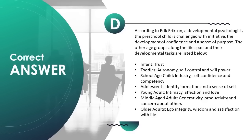Young adult — intimacy, affection, and love. Middle-aged adult — generativity, productivity, and concern about others. Older adults — ego integrity, wisdom, and satisfaction with life.